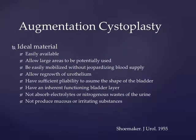The ideal augmentation material was described by Shoemaker in 1955: it should be easily available, allow for large areas to be used, easily mobilized without jeopardizing blood supply, allow regrowth of urothelium, have sufficient pliability to assume the shape of the bladder, have an inherent functioning bladder layer, not absorb electrolytes or nitrogenous waste, and not produce mucus or irritating substances. None of the materials we've gone through so far meet that ideal.